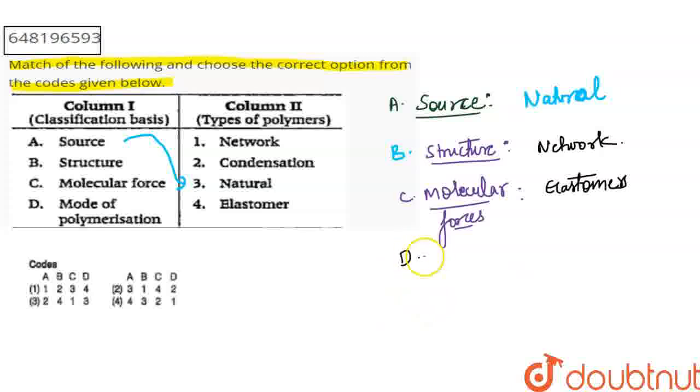Next, it will be D. We have mode of polymerization. We have polymers. Some of them are condensation polymers. Some of them are addition polymers. So as you have understood the name, condensation is going to be...